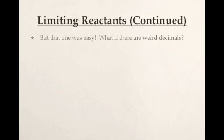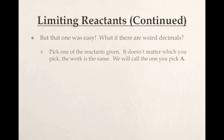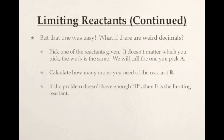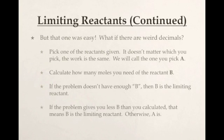I know what you're thinking. That one was an easy one. What if we got weird decimals? What if we got grams? How do you calculate the limiting reactant? Well, here it is. You pick one of the reactants. It does not matter which one you pick. Whatever one we pick, we're going to call it A. You're going to use A to calculate how much B you need, how much of the other reactant. It doesn't matter which one you pick. Here's the part you have to think on. If you don't have enough B, then B is the limiting reactant. So if the problem gives you 5 B and you need 7 B, you don't have enough. So B is the limiting reactant. Otherwise, A is the limiting reactant.